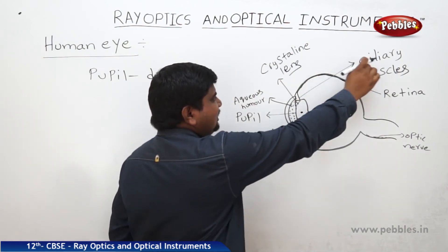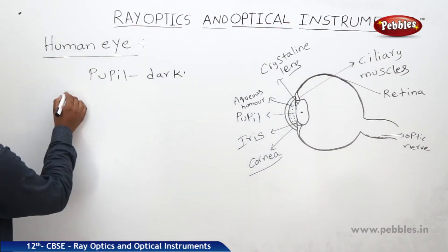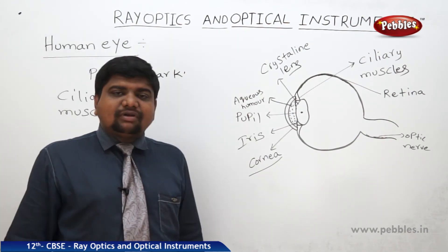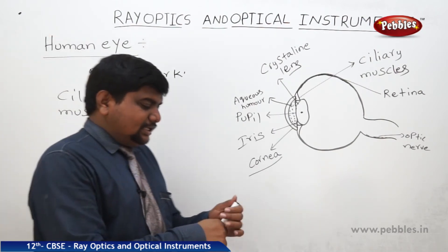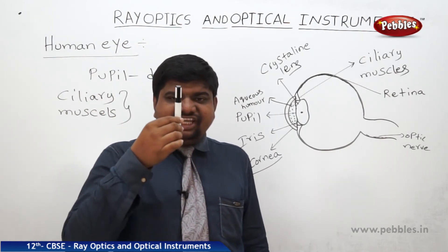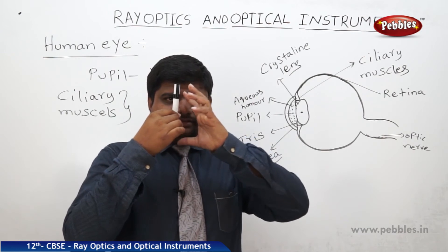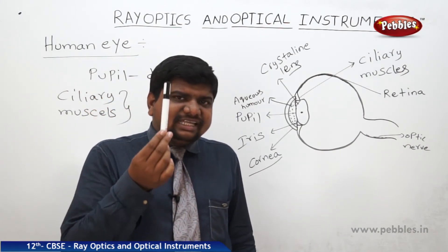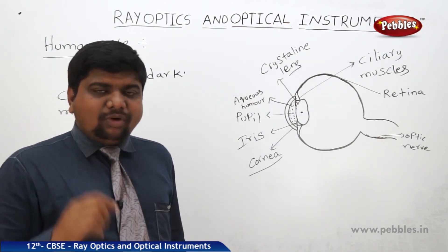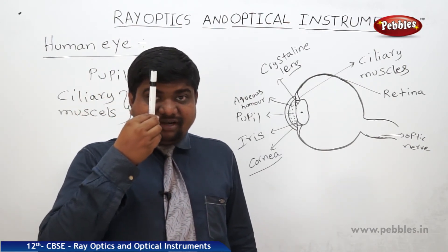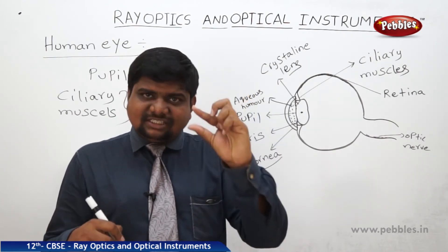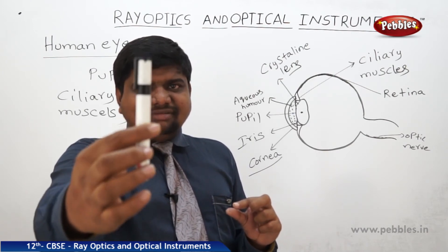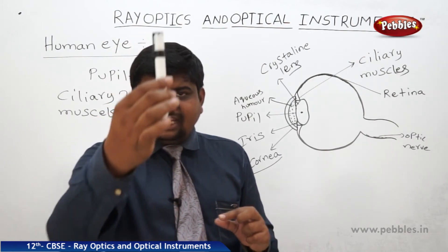The crystalline lens is connected to ciliary muscles, which give the power of accommodation. When an object is placed near the eye, the focal length decreases — the eye lens compresses to converge the light. As the object moves away, the eye lens expands and eventually relaxes. At some distance, all light rays from the object can be accommodated and the object is seen clearly.